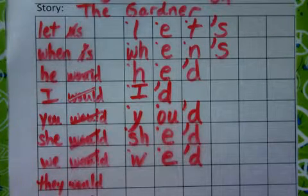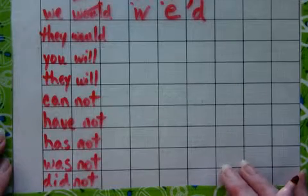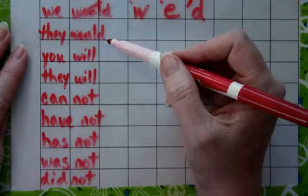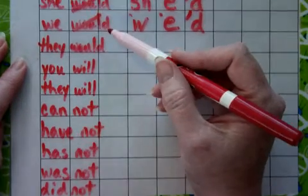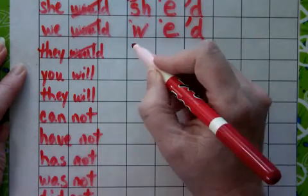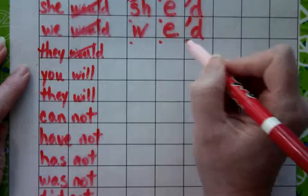Alright third graders, let's finish the rest of our list for the story of The Gardener. I've already written out the two words that we will be contracting or putting together. The next two words we'll be putting together is 'they would.' Just like we did the other words, you drop everything except for the D.